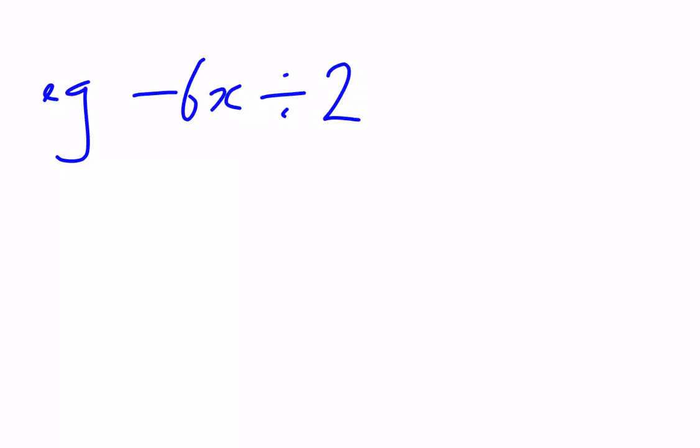If we're dividing, it's always easiest and best to rewrite our division as a fraction. So here I've got negative 6x over 2. Once we've got it as a fraction, we follow the normal rules for simplifying a fraction.